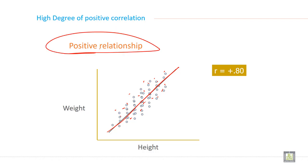And a high degree of positive relationship ranges between 0.75 to 1.